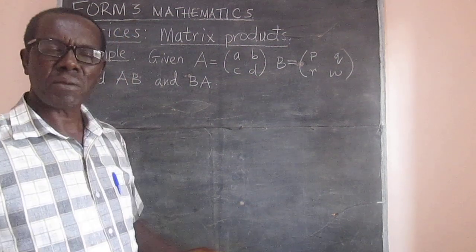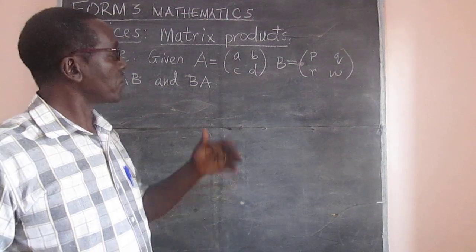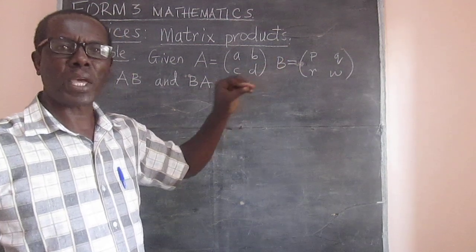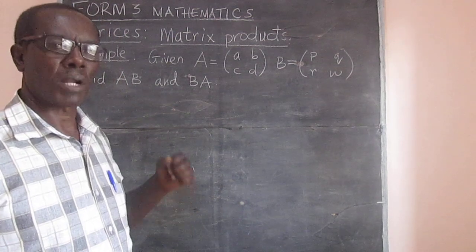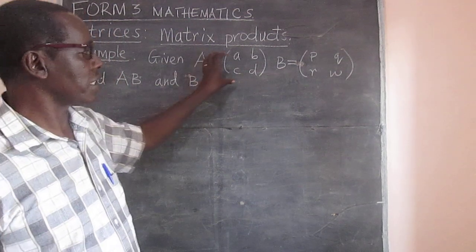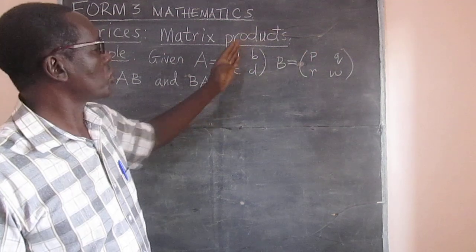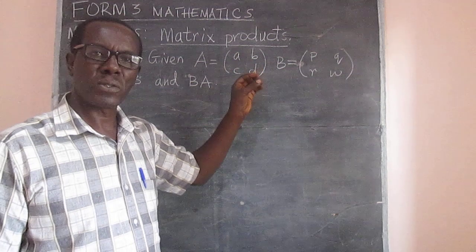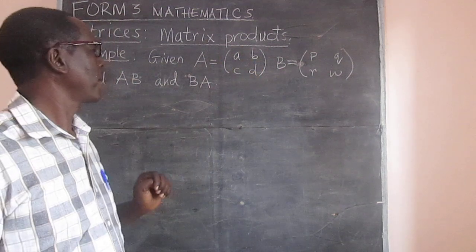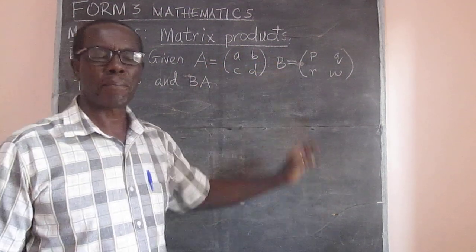We can have 3x3, we can even have rectangular ones where the number of rows is not equal to the number of columns. But in this case, for a start, we want to look at matrices which are 2x2 square.